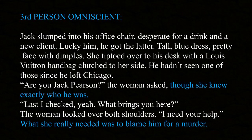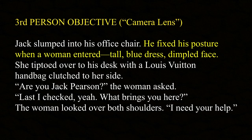Finally, I'm going to do that same scene from third person objective — the camera lens perspective. Jack slumped into his office chair. He fixed his posture when a woman entered. Tall, blue dress, dimpled face. She tiptoed over to his desk with a Louis Vuitton handbag clutched to her side. 'Are you Jack Pearson?' the woman asked. 'Last I checked, yeah. What brings you here?' The woman looked over both shoulders. 'I need your help.' In this example we cut out people's thoughts, we cut out opinions, we cut out everything except what we can see. We put it in front of the reader as if filming through a camera lens. We don't learn that Jack is desperate for a drink and a client, but we see him fix his posture when the woman walks in — that lets us know he's interested.